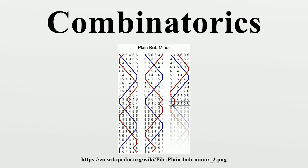Topological combinatorics should not be confused with combinatorial topology, which is an older name for algebraic topology. Arithmetic combinatorics arose out of the interplay between number theory, combinatorics, ergodic theory, and harmonic analysis. It is about combinatorial estimates associated with arithmetic operations. Additive combinatorics refers to the special case when only the operations of addition and subtraction are involved. One important technique in arithmetic combinatorics is the ergodic theory of dynamical systems.